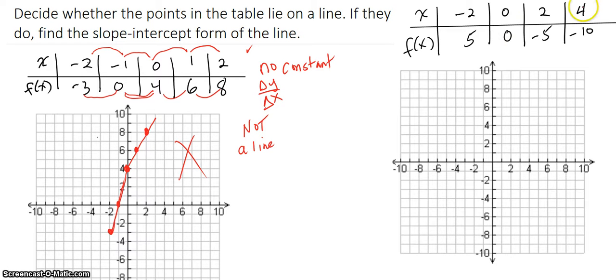Over on this one, I see a steady delta x of positive 2. Negative 2 to 0, 0 to 2, 2 to 4. So I'm looking for a steady increment of y now. 5 goes down to 0, negative 5. 0 goes down to negative 5. A negative 5 increment. And negative 5 goes down to negative 10.